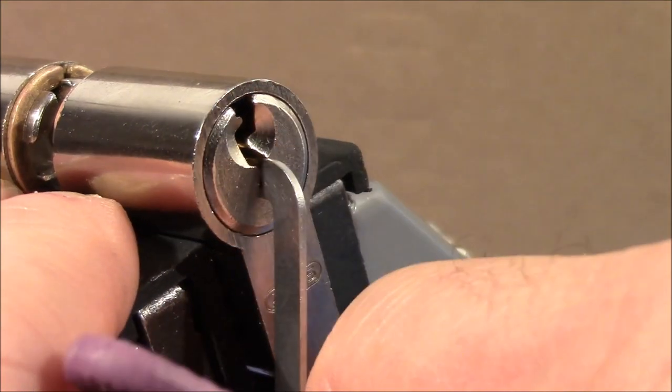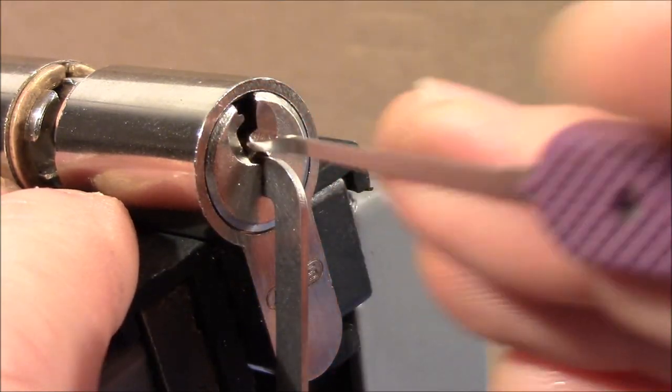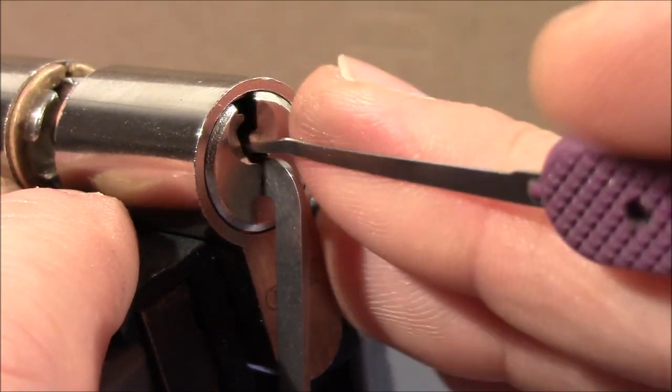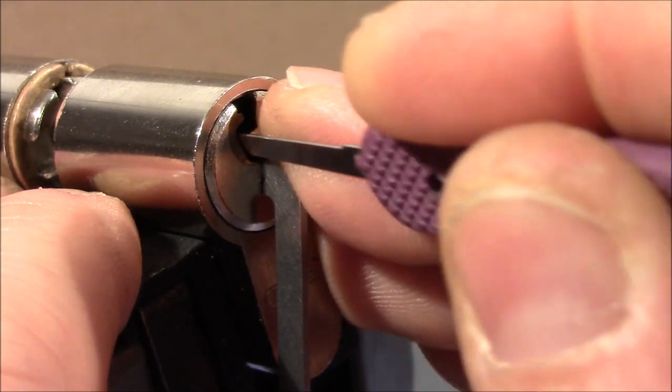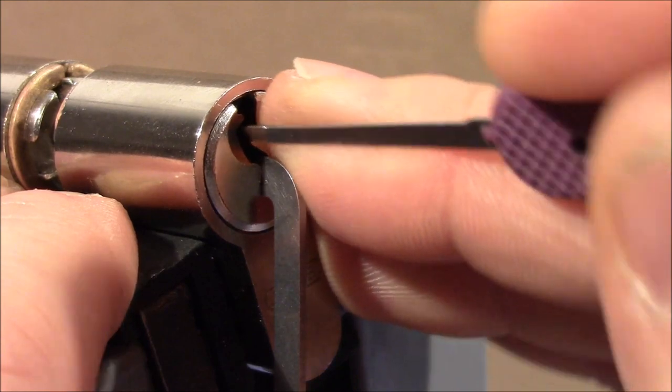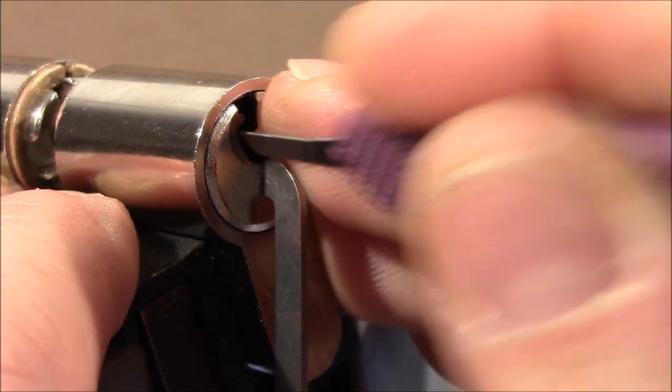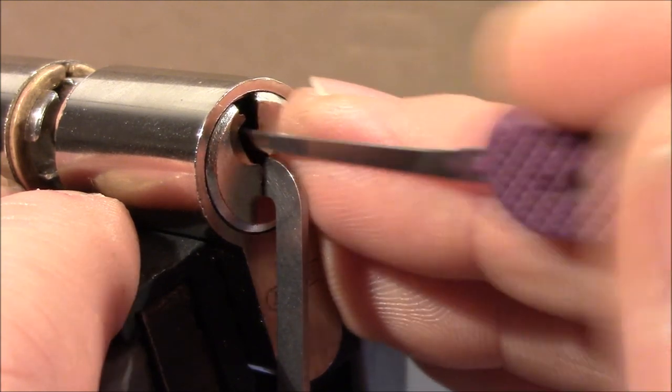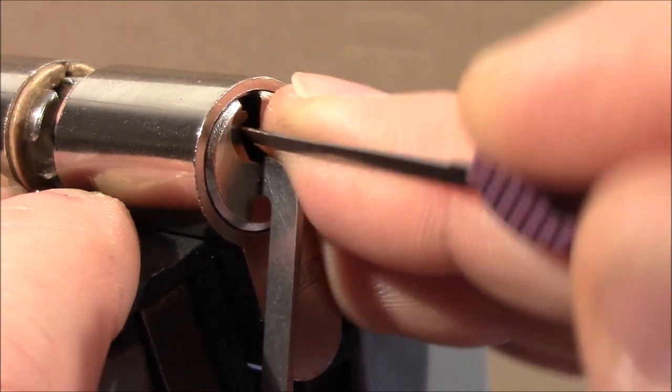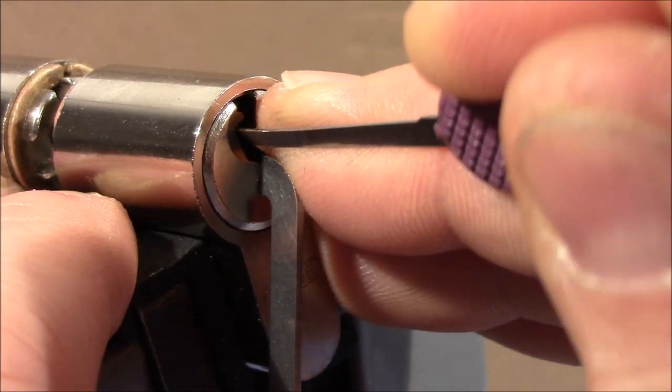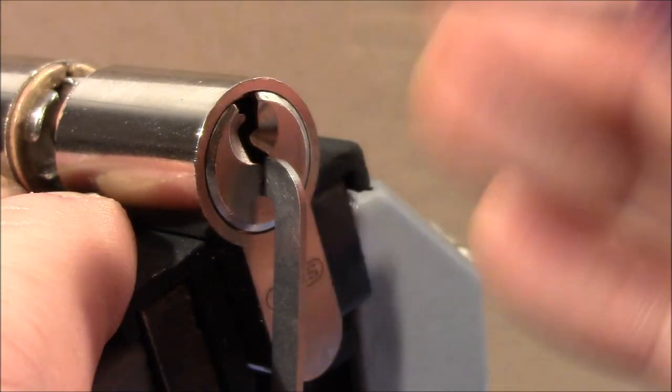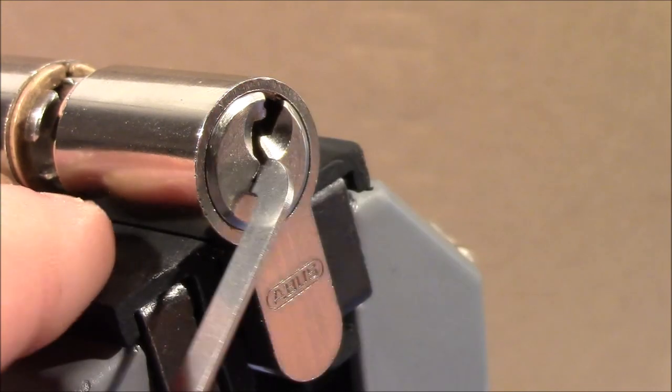So I have reset the lock and I just use this hook, the Deforest from Peterson. Just brush over the pins. Dropped into a nice false set. Pin 1 is binding. Release tension and very lightly brush over the pins. False set is back. 3 is binding. Got it. 4 was coming up and it's open.